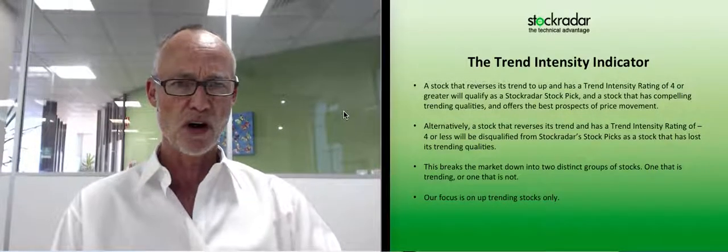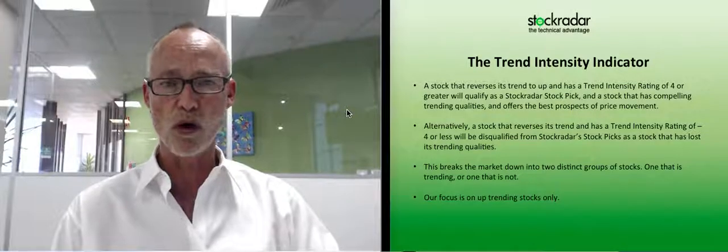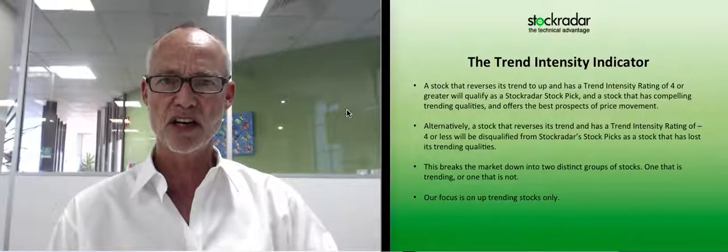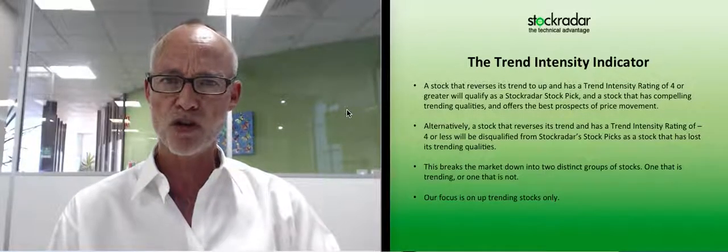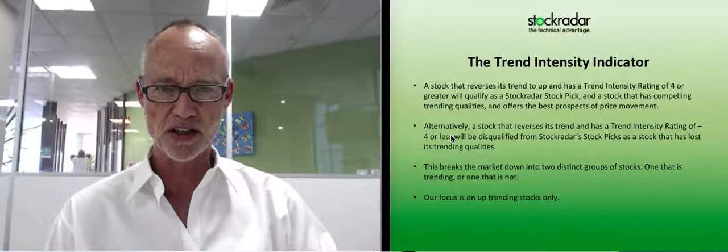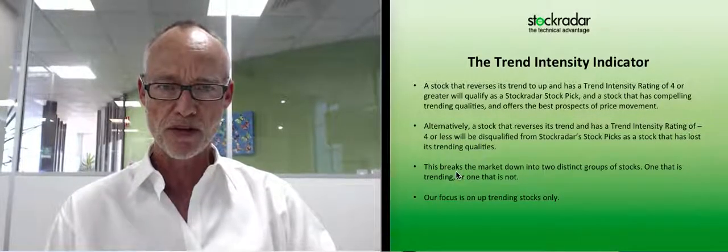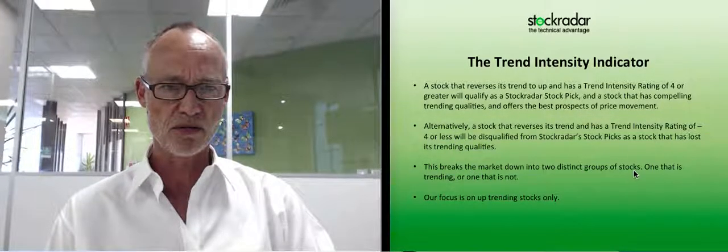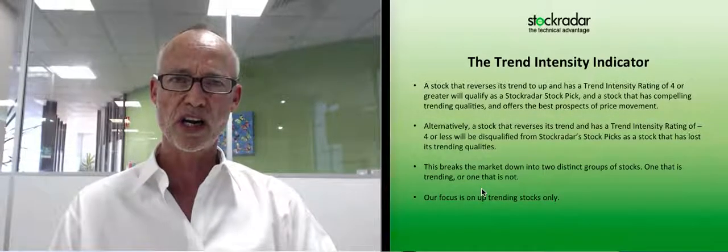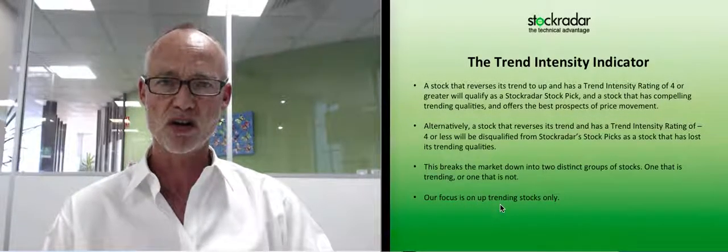You can look at all the other sectors in the trading center and get a quick view of which are the strong, which are the weak, and how strong they are. A stock that reverses its trend to up and has a trend intensity rating of four or greater will qualify as a StockRadar stock pick — a stock with compelling trending qualities and the best prospects of price movement. Vice versa on the downside. This breaks the market into two distinct groups: one that is trending and one that is not. If it's not trending, I am in cash. If it's trending, I am in equities. Our focus is on up-trending stocks only.